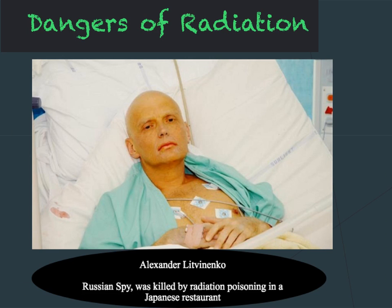Recently in the news, some of the information regarding the death of Russian spy Alexander Litvinenko has come out. Mr Litvinenko was killed by radiation poisoning in a Japanese restaurant using an alpha-emitting source that, once ingested, would have been unable to escape the body whilst being incredibly ionising and therefore dangerous.